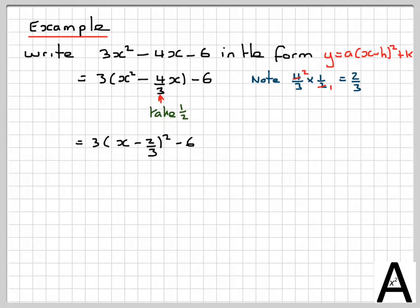This bit here we will now expand. So we've got 3 brackets x minus 2 over 3 all squared. So that's 3 x squared minus 2 times minus 2 over 3 times x minus 4 over 3x plus 4 over 9. And then taking the 3 in, we get 3 x squared minus 4 over 9 plus 4 over 3.